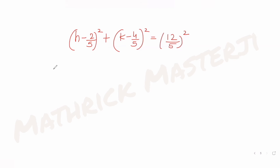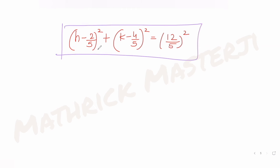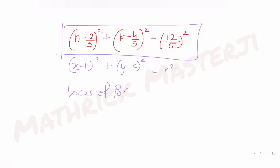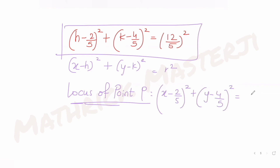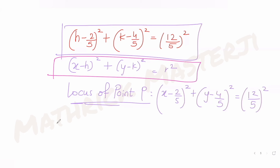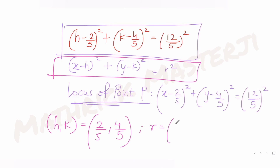This locus of point P is in the form of a circle equation (x − h)² + (y − k)² = r². Replacing h and k with x and y: (x − 2/5)² + (y − 4/5)² = (12/5)². Comparing with the general form, the center coordinates are (2/5, 4/5) and the radius is 12/5.